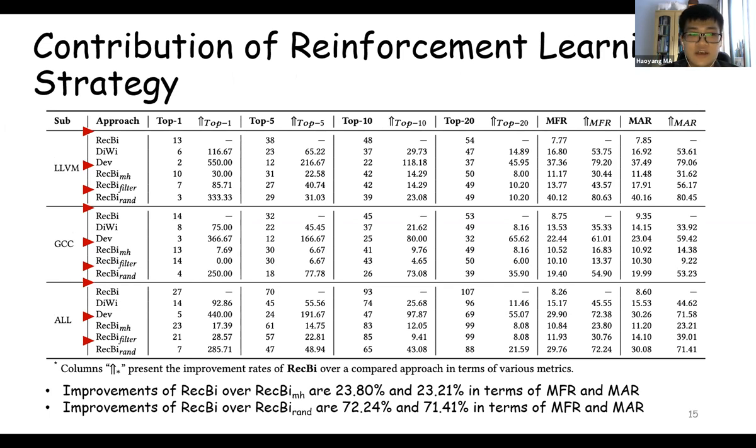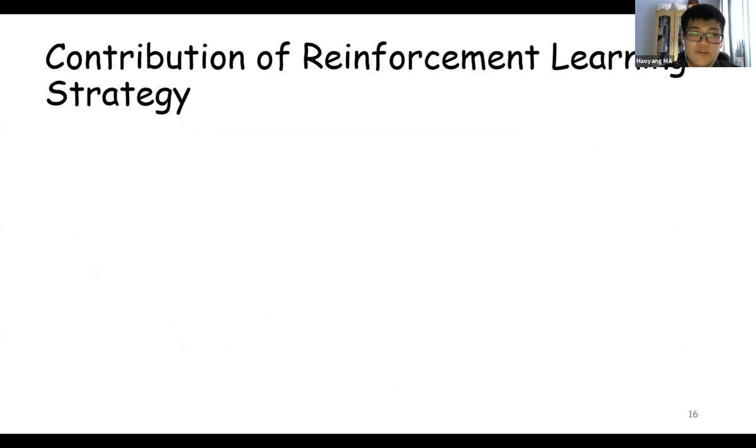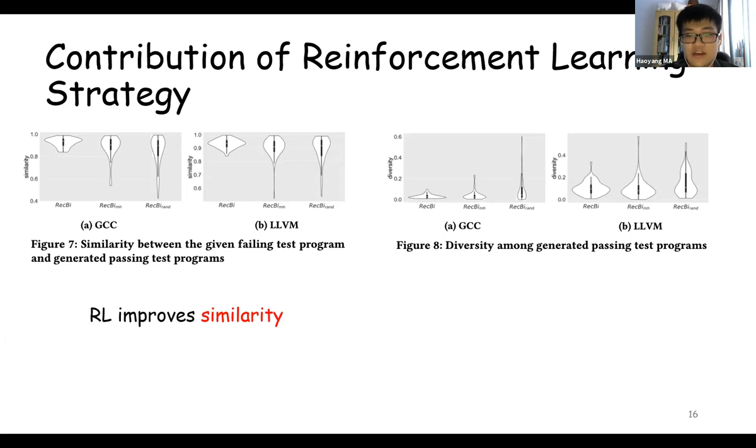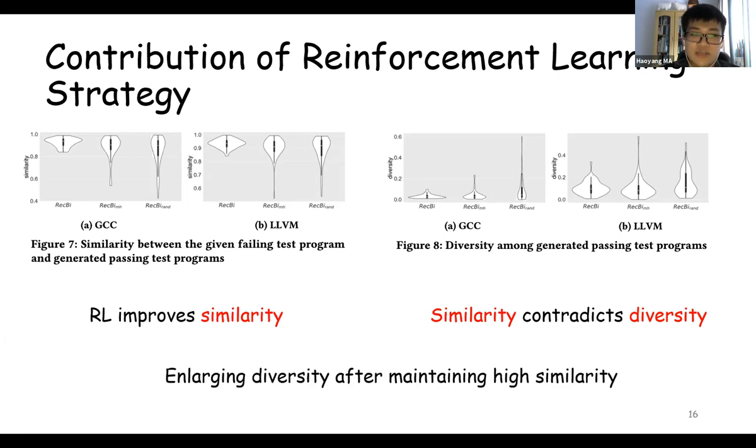Here is the contribution of reinforcement learning strategy. We compare Rugby, Rugby MH, and Rugby RAND. The improvements of Rugby over Rugby MH and Rugby RAND can prove the role of reinforcement learning strategy. We further study the contribution of it by drawing a violin plot and box plot for GCC and LLVM bugs using Rugby, Rugby MH, and Rugby RAND. By comparing these three techniques, we find that reinforcement learning improves similarity. We further draw a violin plot and box plot of diversity. Rugby has no advantage of diversity compared with the other two techniques. So we assume that similarity may contradict diversity. We have an assumption that reinforcement learning may enlarge diversity after maintaining a high similarity.